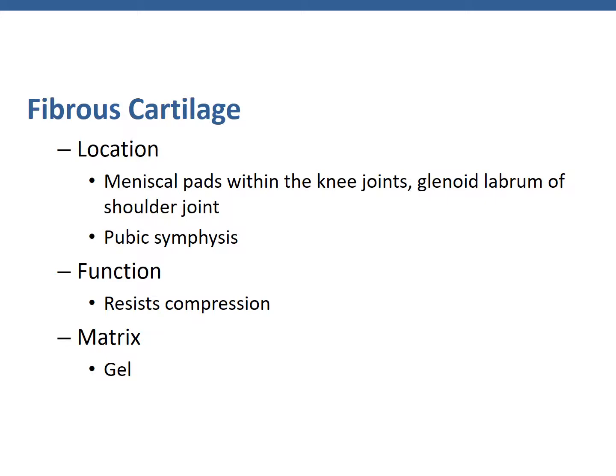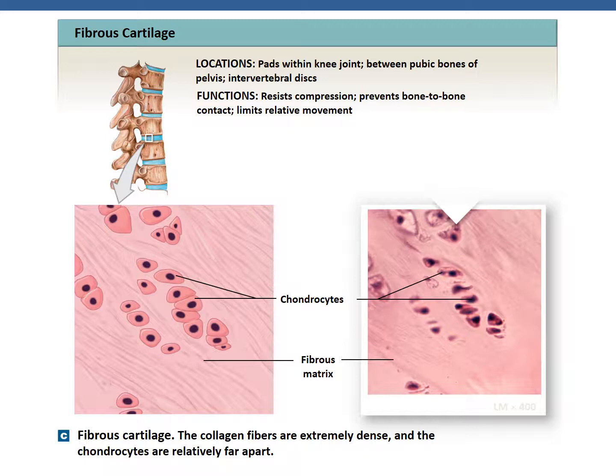The final type of cartilage is called fibrous cartilage, or fibrocartilage. This is found in the meniscal pads within the knee joints, in the glenoid labrum of the shoulder joint, the acetabular labrum of the hip joint, and in the pubic symphysis. Its function is to resist compression. Its matrix is gel, but there is very little ground substance, it lacks a perichondrium, and there are many collagen fibers. The fibrous matrix features extremely densely packed collagen fibers separating the chondrocytes from one another.